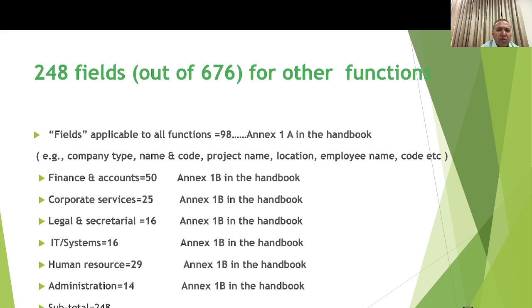So the grand total for the real estate industry is 676 fields. Similarly, in case of any engineering function — such as manufacturing, materials procurement, quality control, final dispatch, or design R&D for the engineering industry — the number of fields will obviously go up, and the total number of fields can go beyond 1000.